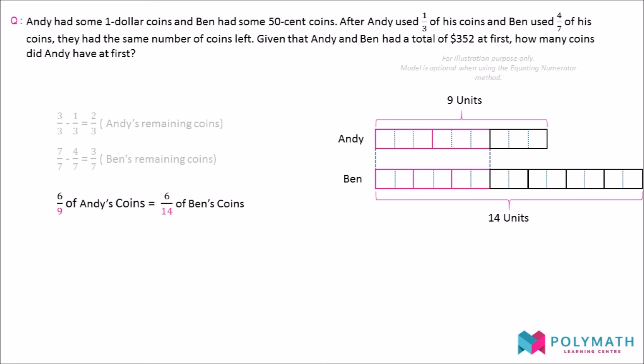After multiplying, we can see that the original number of units for Andy and Ben are 9 units and 14 units respectively. We can now express Andy's coins and Ben's coins in a ratio 9 is to 14.